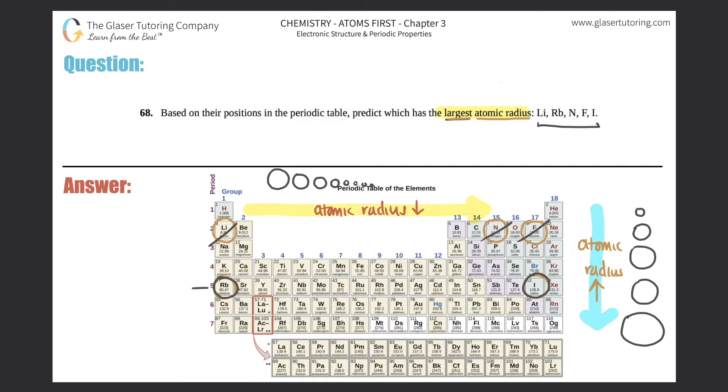Now we just have to compare between rubidium and iodine. That takes care of this trend: as I go from left to right, atomic radius will decrease. So the ones on the left side would be much larger than the ones on the right side.